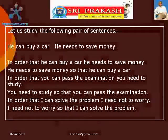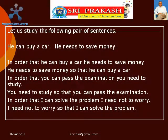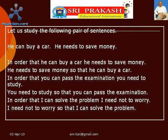Let us study the following pair of sentences: 'He can buy a car' and 'He needs to save money.' In order that he can buy a car, he needs to save money. He needs to save money so that he can buy a car.